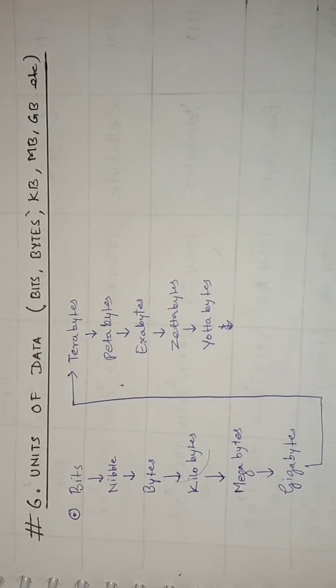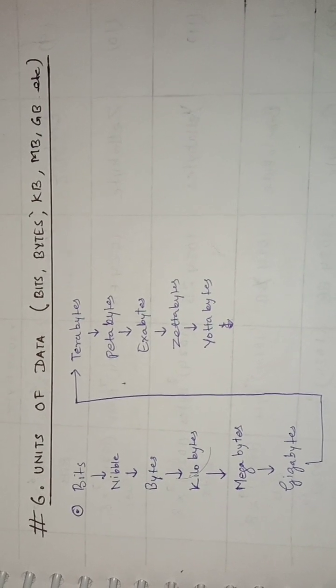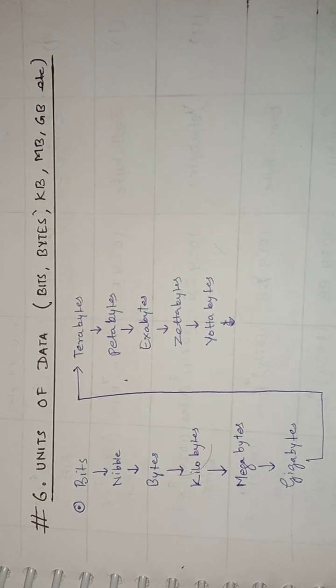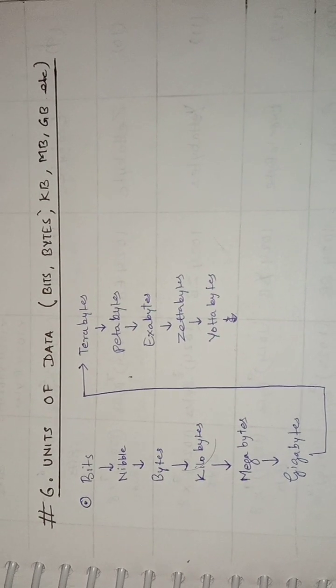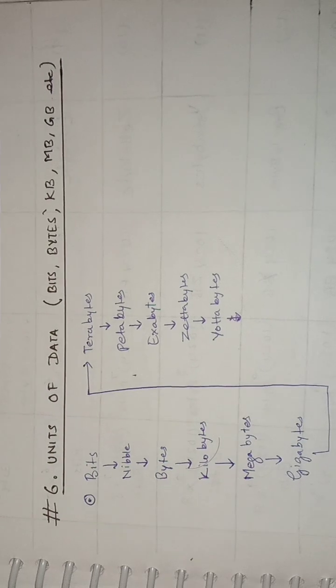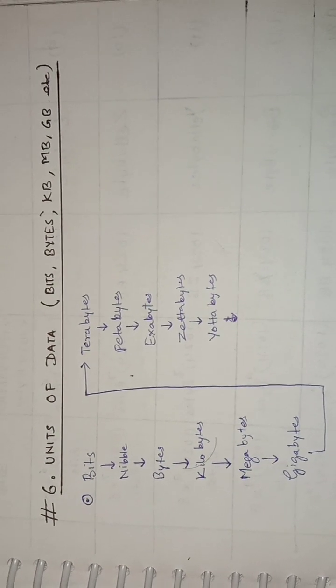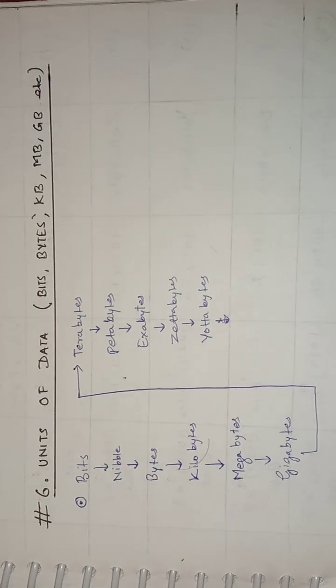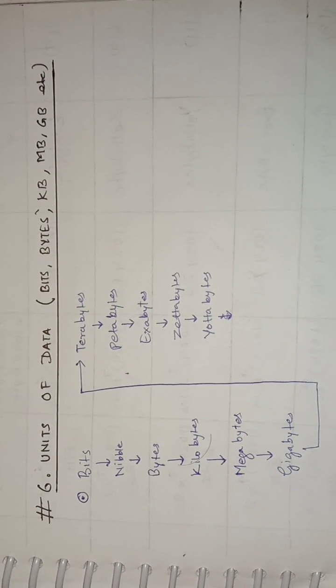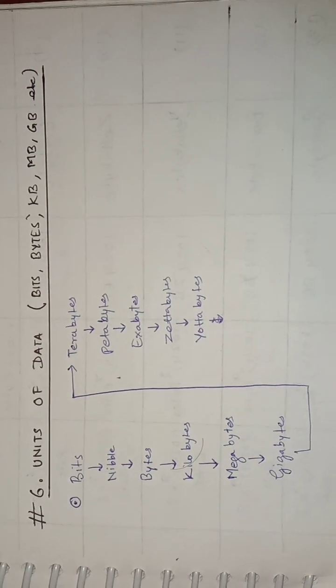Now let's look at the units of data. The smallest unit is a bit, then four bits make one nibble, eight bits or two nibbles make one byte. Bytes make kilobytes, kilobytes make megabytes, megabytes make gigabytes, gigabytes make terabytes, terabytes make petabytes, petabytes make exabytes, exabytes make zettabytes, and further yottabytes. This is how the units of data grow. In general, today's computers use data up to terabytes.